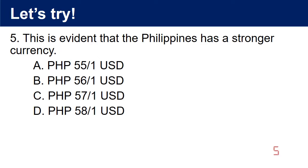Question 5: This is evident that the Philippines has a stronger currency. A. 55 Philippine Pesos per one United States Dollar. B. 56 Philippine Pesos per one United States Dollar. C. 57 Philippine Pesos per one United States Dollar. D. 58 Philippine Pesos per one United States Dollar. The answer is A. 55 Philippine Pesos per one United States Dollar.